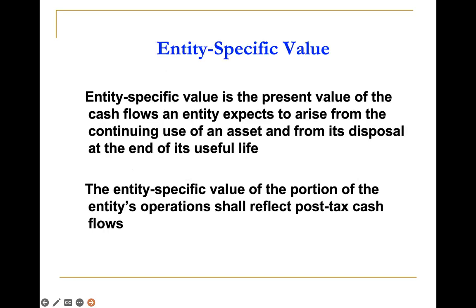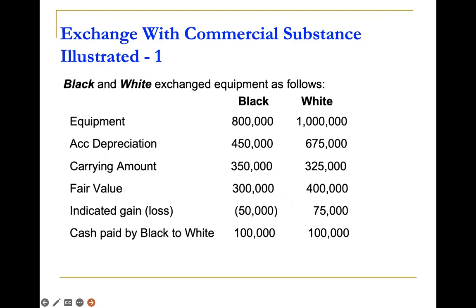Let us apply. Black and White exchange equipment. The first column pertains to Black's asset: cost of $800,000, accumulated depreciation of $450,000, so the carrying amount is $350,000. The difference between the carrying amount and the fair value of $300,000 indicates a loss of $50,000 since the fair value is lower than the carrying amount.